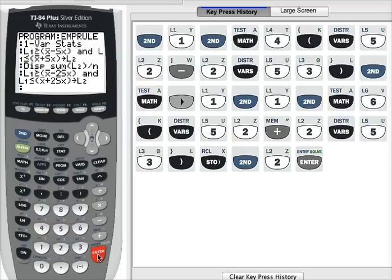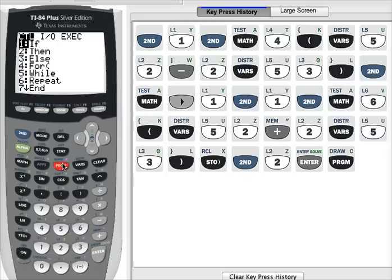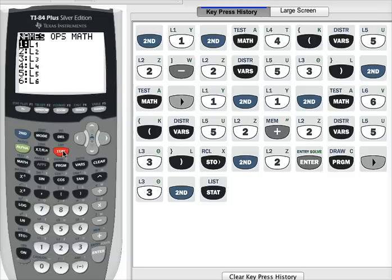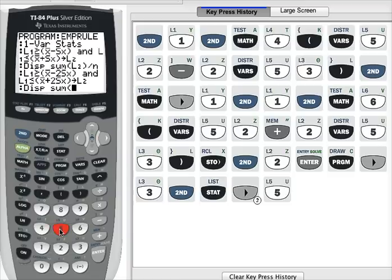And now I need to display my new percentage. So under program, right arrow, display is option number three. So I need to take the sum of list two. Second, stat button, the right arrow twice, sum is option number five. List two is second, two.